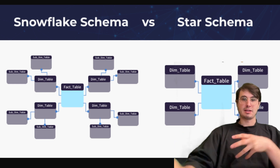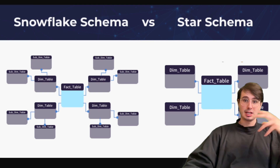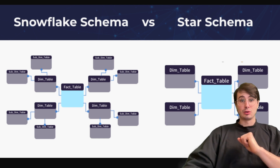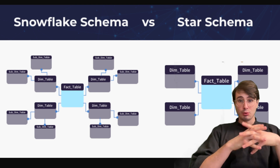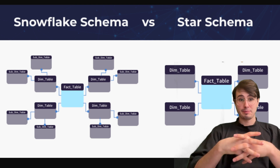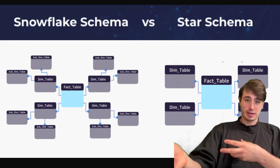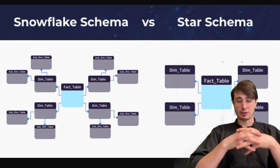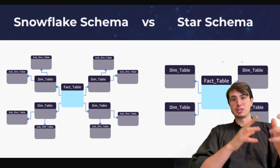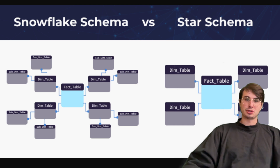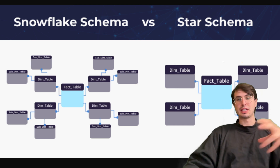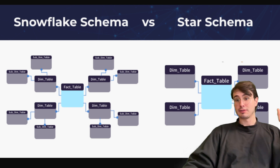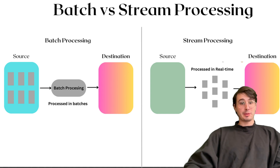An example response would be: a star schema has a central fact table directly connected to dimension tables, making it easier and faster for querying. A snowflake schema, on the other hand, normalizes dimension tables into multiple related tables, reducing redundancy but increasing query complexity. I would use a star schema for analytics requiring high query performance, and a snowflake schema when data consistency and storage optimization are critical.